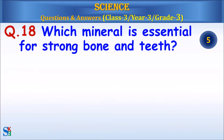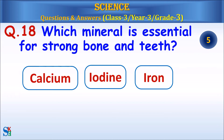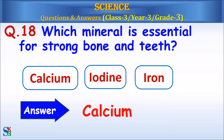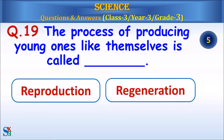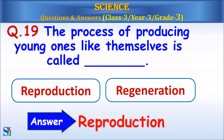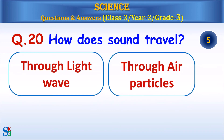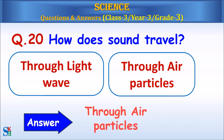Question 18: Which mineral is essential for strong bones and teeth — calcium, iodine, or iron? Answer: Calcium. Question 19/20: The process of producing young ones like themselves is called reproduction or regeneration? Question 20: How does sound travel — through light waves or through air particles? Answer: Through air particles.